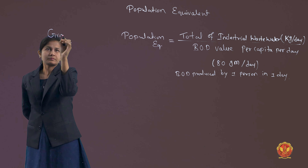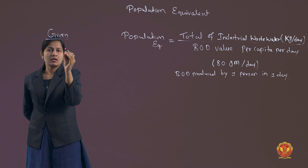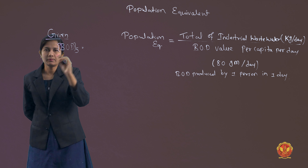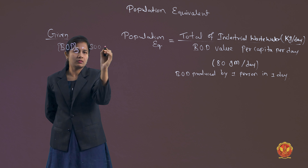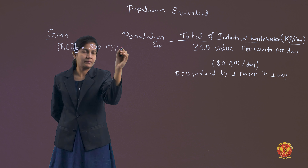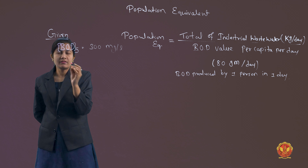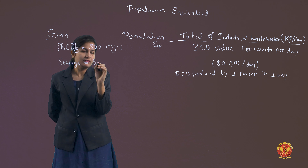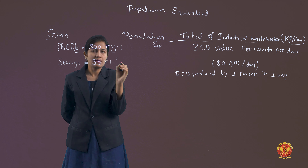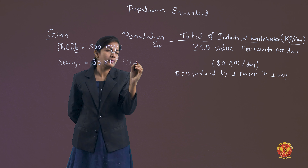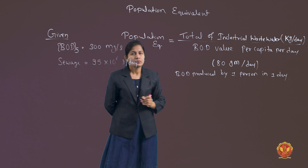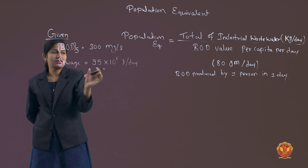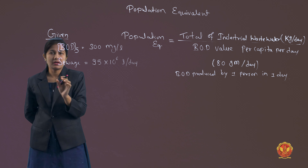Let's write the given data first. The 5-day BOD is 300 mg per litre. The sewage produced is 95 into 10 to the power 6 liters per day. The average sewage flow is 95 into 10 to the power 6 liters per day.